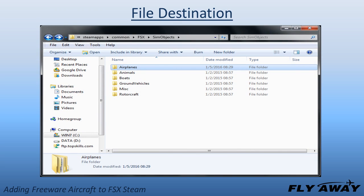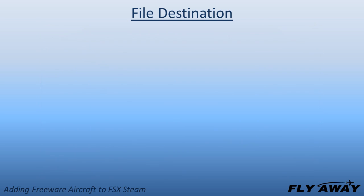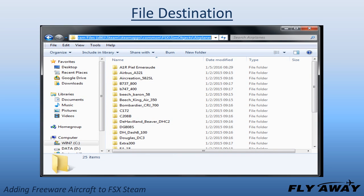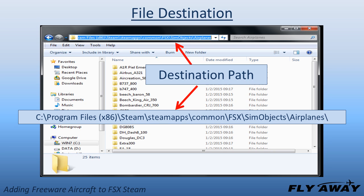In SIM Objects, you will find folders for objects including Airplanes and Rotorcraft. To add an airplane, double-click on Airplanes. To add a helicopter, double-click on Rotorcraft. When you are ready to add your aircraft to FSX STEAM, you will use the file path shown in the top line of Windows Explorer.